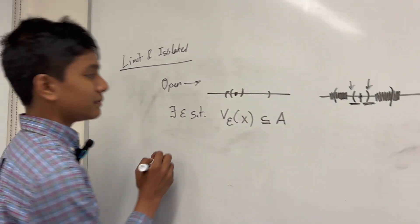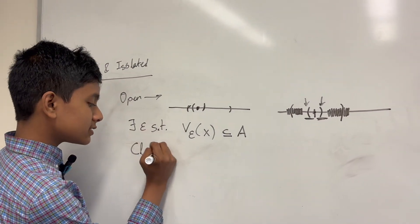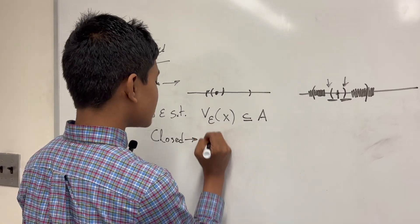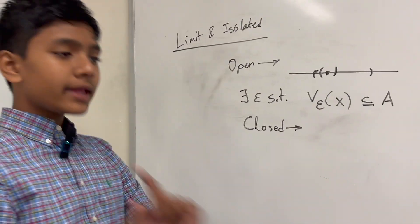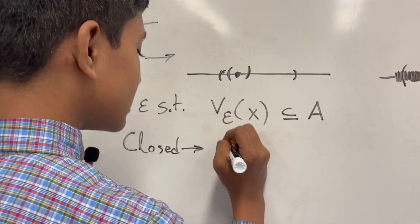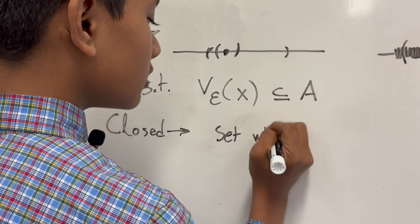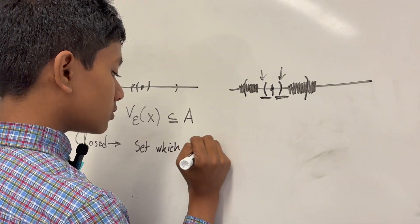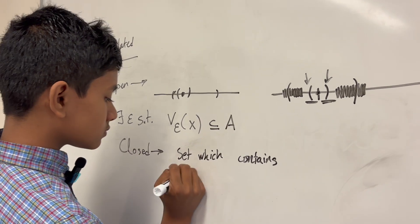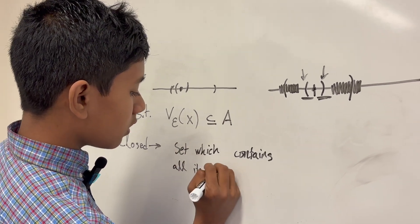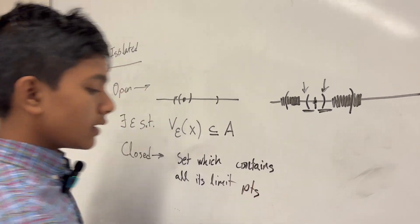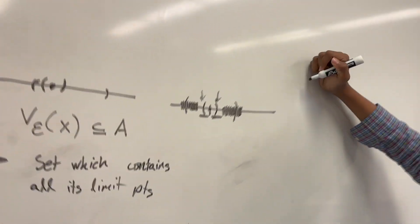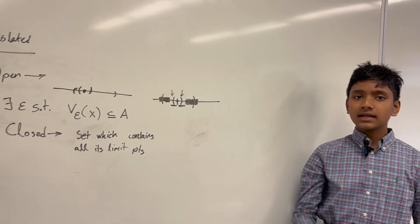That is what open means. Now, can you guess what closed means? Not open — bad idea. We defined closed as something whose complement is open. However, our textbook defines closed as a set which contains all its limit points. Don't worry, we'll coincide these two later. And that later time has come, because now we're going to show that a set which contains all its limit points has a complement which is open.